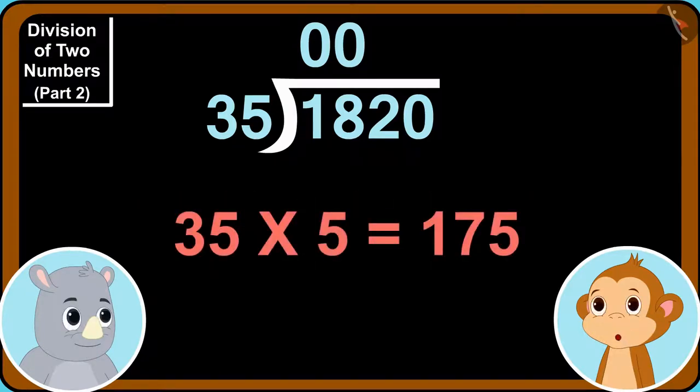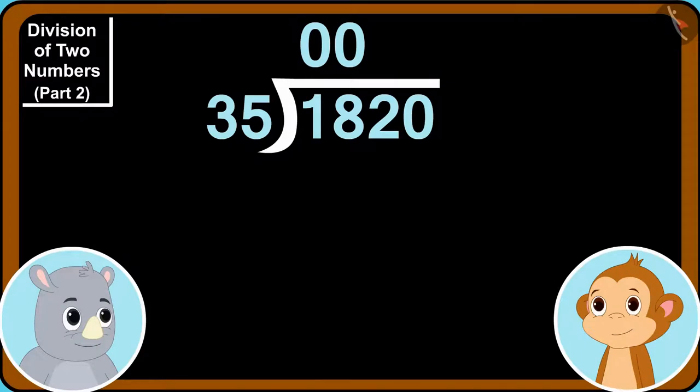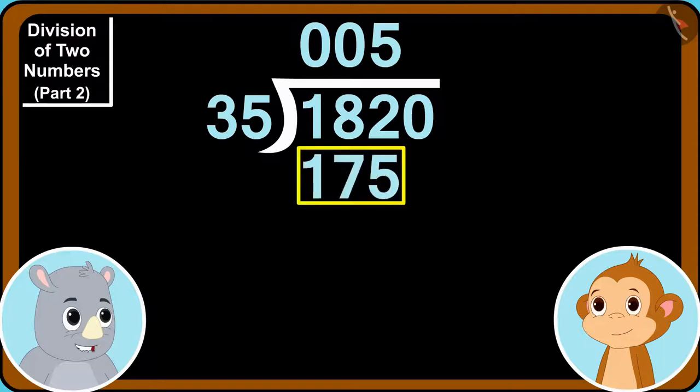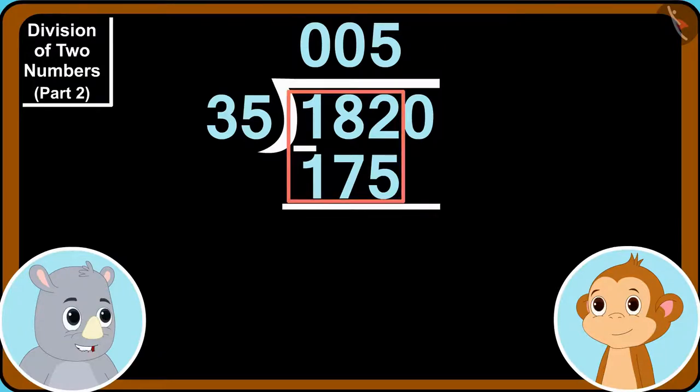35 times 5 is 175. Alright. So, we will write 5 here and 175 down here.